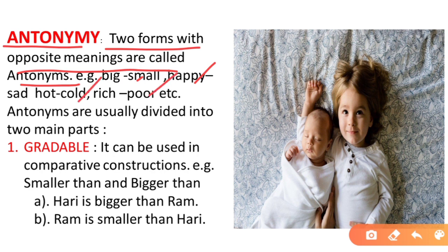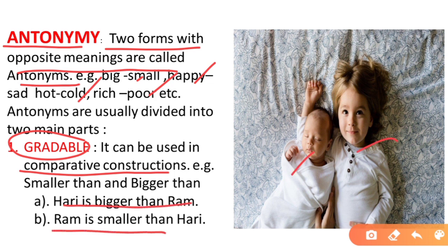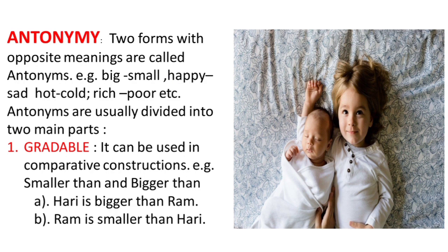Antonyms are usually divided into two main parts. First is gradable antonymy — these are used in comparative constructions. For example, 'Hari is bigger than Ram' and 'Ram is smaller than Hari' — here bigger and smaller are used in a comparative construction.